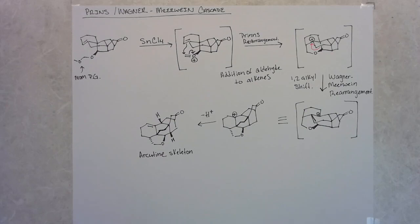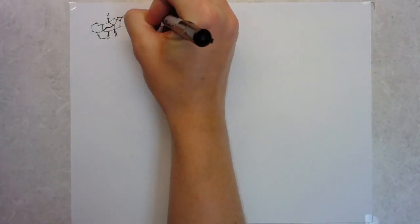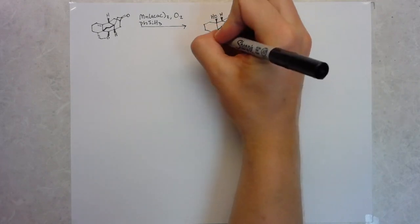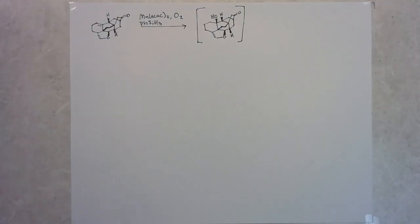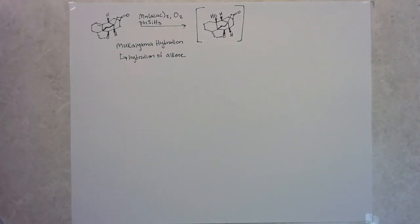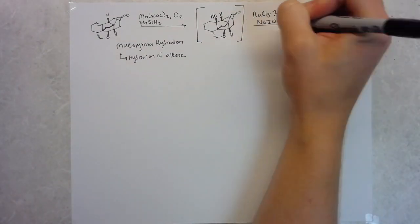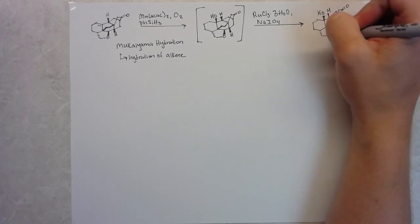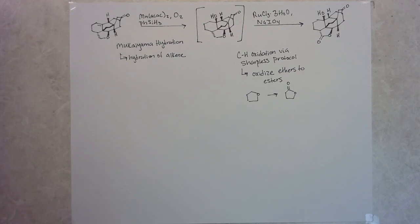Going forward with the synthesis, the next step is a Mukayama hydration, which is the hydration of the alkene that adds an alcohol with Markovnikov selectivity to the tertiary position. This alcohol had previously given other groups difficulty to install later on in their syntheses. The author stated here that this step also took a fair amount of optimization. Normally Mukayama hydrations are done with cobalt, but here they found that manganese worked better. They follow this up by doing a selective CH oxidation using the Sharpless protocol. They do this to install a carbonyl on the furan ring, giving them the lactone. They do this so they can eventually cleave this lactone, leaving them with an aldehyde that they can then use to install the pyrrolein ring.